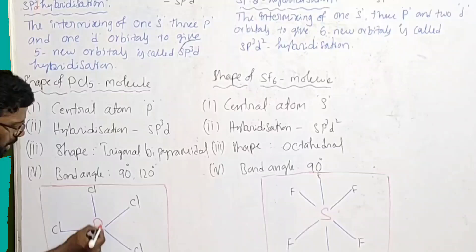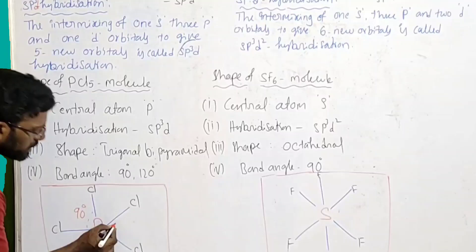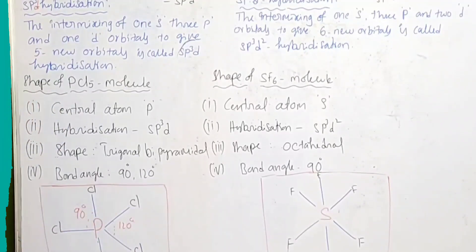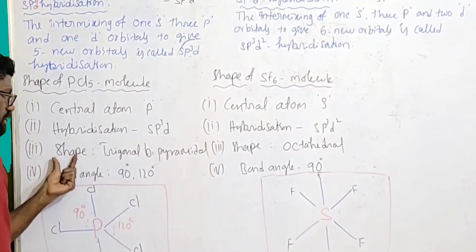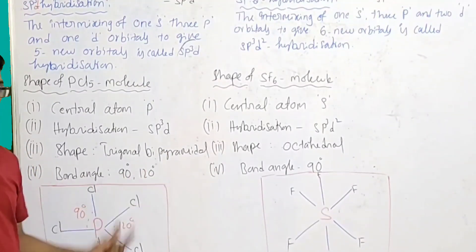This bond angle is 90 degrees, and this bond angle is 120 degrees - two bond angles. So that's all: central atom is phosphorus, hybridization sp3d, shape trigonal bipyramidal, bond angles 90 and 120 degrees.